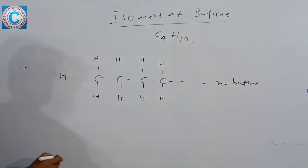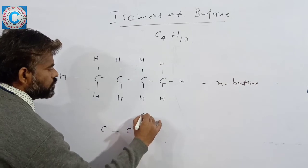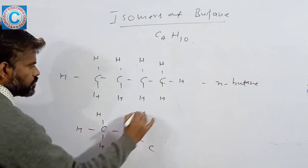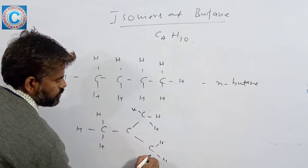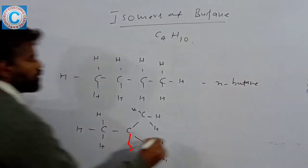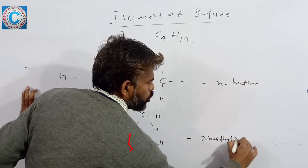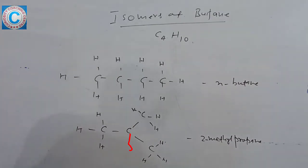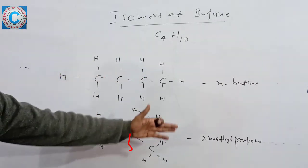Next, this is 2-methylpropane. There are no other isomers possible, so there are 2 isomers of butane: N-butane and 2-methylpropane.